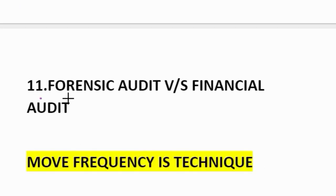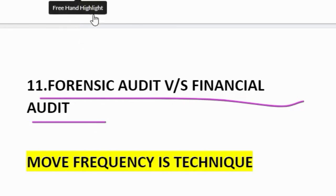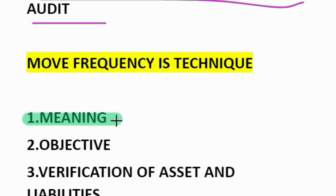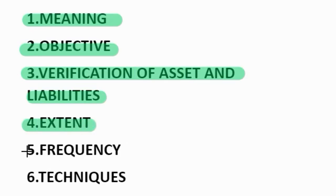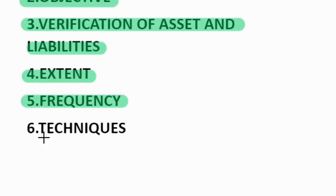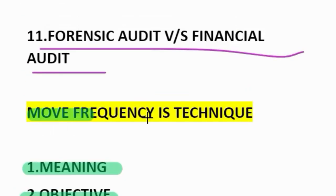Eleventh question: forensic auditor versus financial auditor. How to remember? MOVE FREQUENCY IS TECHNIQUE. M stands for meaning. O stands for objective. V — verification of assets and liabilities. E stands for extent. F for frequency and T for techniques. So MOVE, FREQUENCY IS TECHNIQUE.